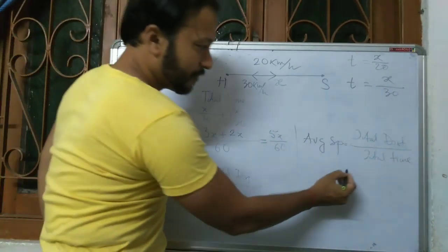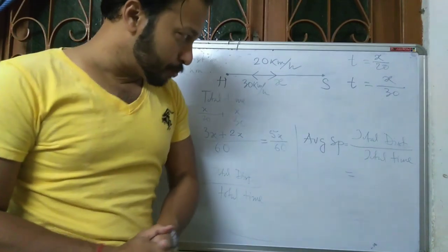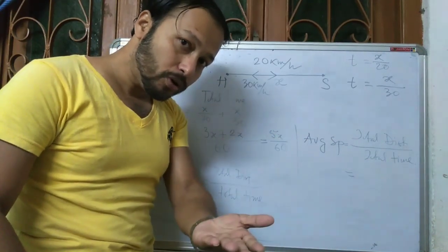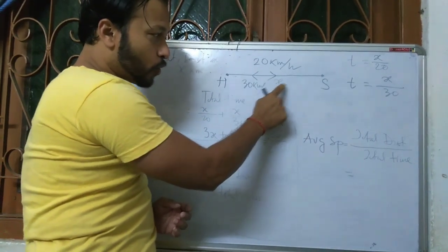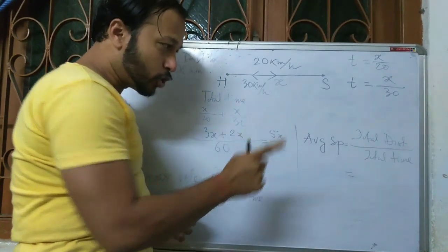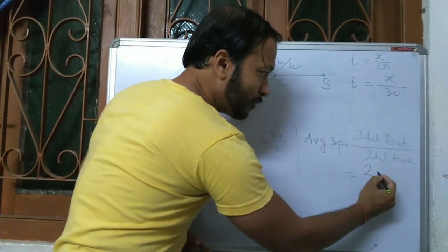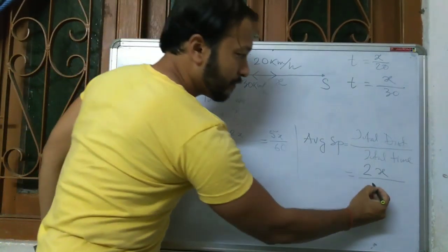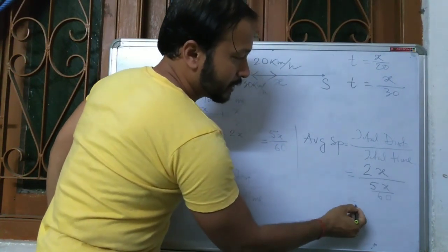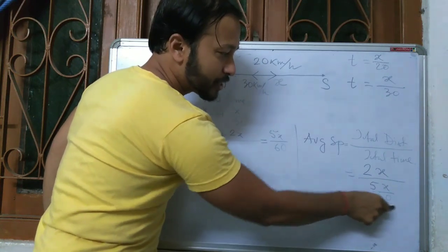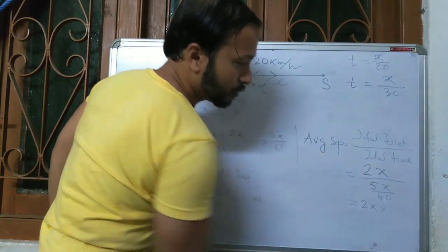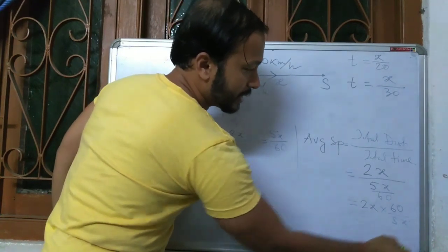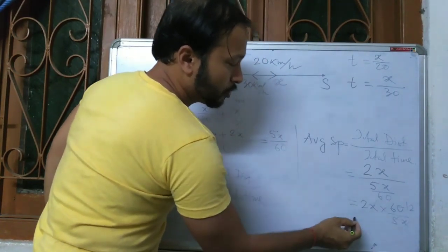Now let us find average speed. Average speed equals total distance divided by total time. Total distance covered: x going to school plus x coming back, so 2x. Total time is 5x/60. Therefore average speed equals 2x divided by 5x/60, which gives 2x multiplied by 60 divided by 5x. The x cancels, giving 120 divided by 5, which equals 24 kmph.